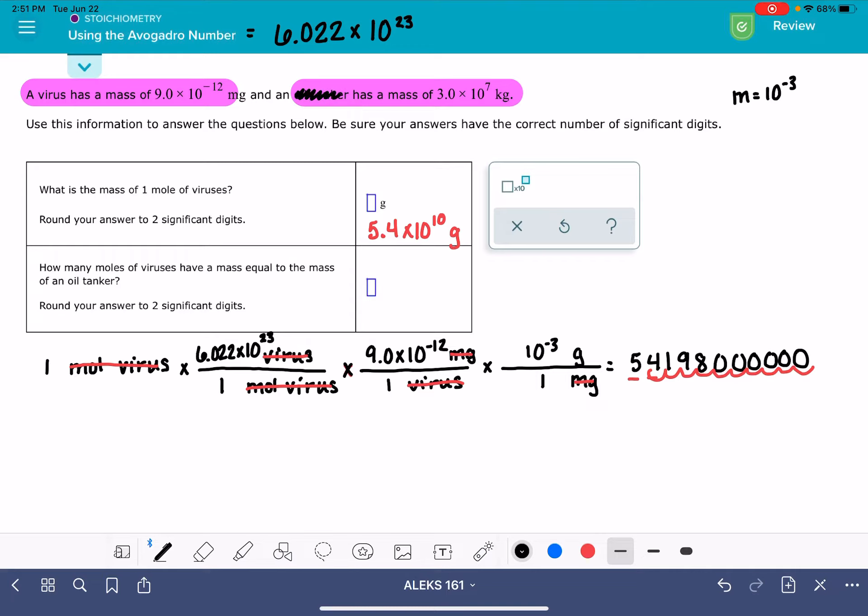So if we just kind of ignore the oil tanker part of the question, if we scratch out the oil tanker here, and we just change it to say, how many moles of viruses have a mass of 3 times 10 to the 7 kilograms? To me, that makes the problem a little bit easier. We don't really have to think about the oil tanker. The oil tanker has no relevance to this problem.